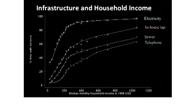This next slide will be familiar to you because you tried to draw these lines in the exercise after the introductory video. As you can see, globally in the LSMS data, electricity is on top — more households have electricity at all levels of income than any of the other infrastructure services. Note also that the lines don't cross: electricity is always on top, followed by water, then sewer, and lastly telephone.